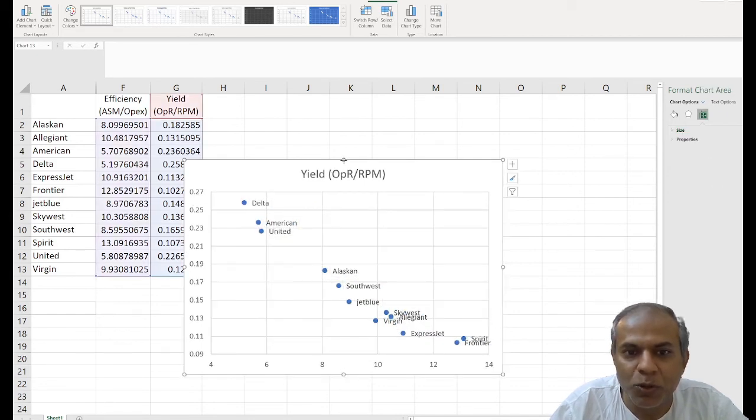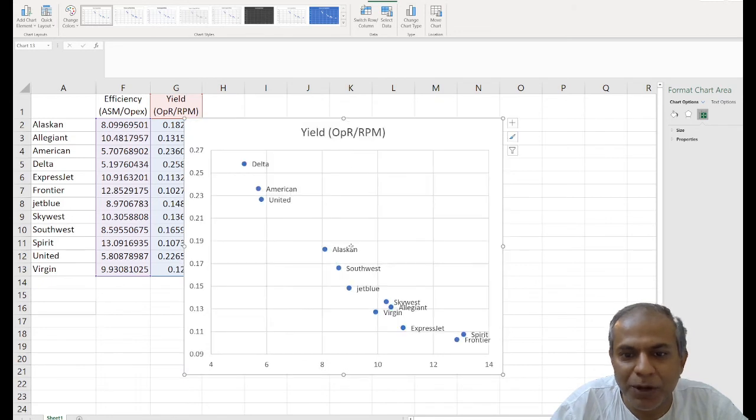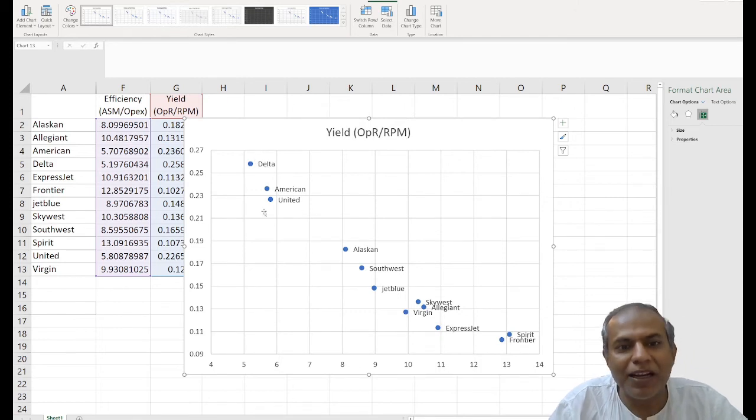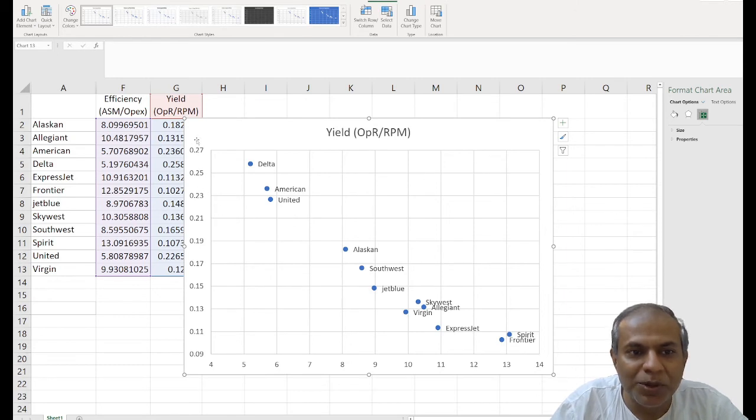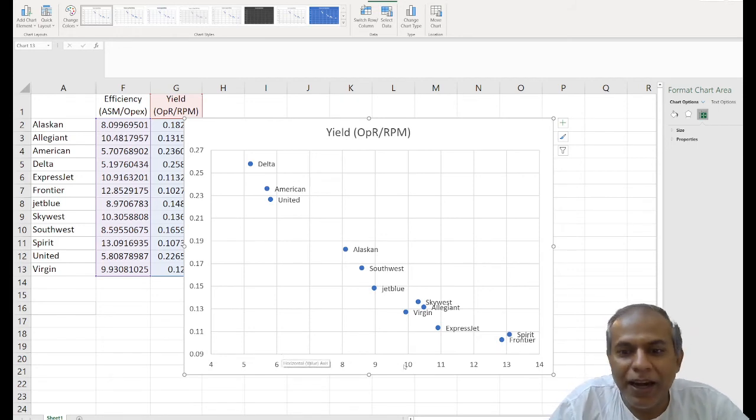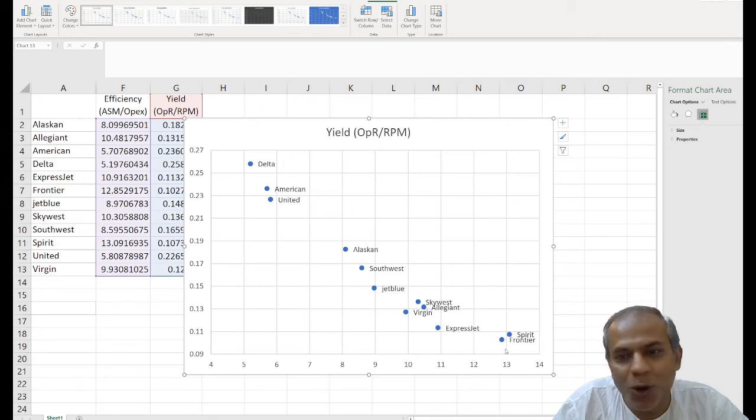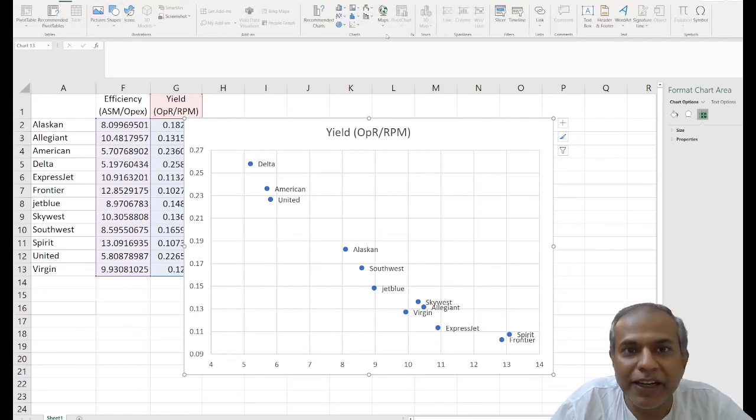Now what we see here very clearly is that Delta, American, and United, which are full service airlines, have high yield numbers but very low efficiency numbers. And Spirit and Frontier, which are low-cost airlines, have very high efficiencies like they should, but have very poor yields.